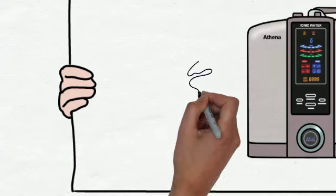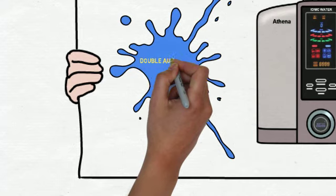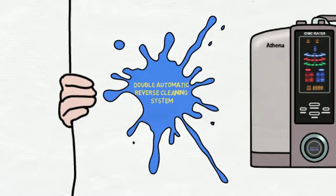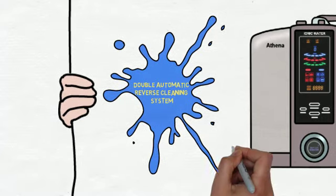The IonWaze Athena also offers the double automatic reverse cleaning system. This system will completely eliminate mineral scaling, ensuring that you'll have many long years of healthy water and you'll never have to think about cleaning your ionizer.